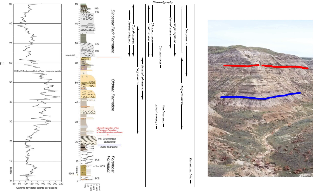Gorgosaurus is the most common tyrannosaur within the Dinosaur Park Formation and is now known to extend down into the Old Man Formation as well. Daspletosaurus is known from the Old Man Formation and has been reported in the Dinosaur Park Formation, though new research suggests some of those specimens may actually be Gorgosaurus. The newest tyrannosaur to Canada, Thanatotheristes, is known from the upper Foremost Formation and was found only about 45 kilometers south of White Rock Coulee. Regarding small theropods, Stenonychosaurus is now constrained to the lower Dinosaur Park Formation, though it is unknown if it's present in the Old Man Formation. A new troodontid discovery in the Dinosaur Park Formation has begun to give more insight into small theropod biostratigraphy.